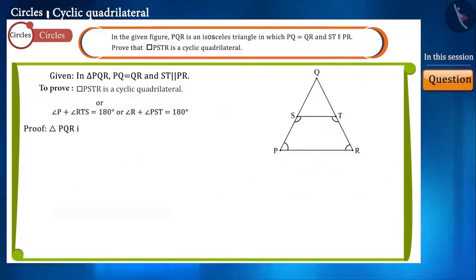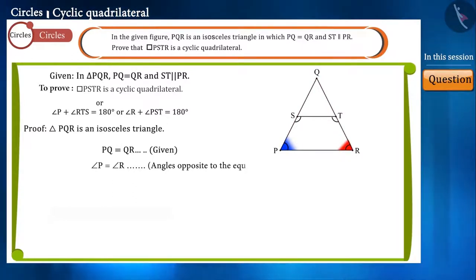Friends, according to the question, triangle PQR is an isosceles triangle in which the sides PQ and QR are equal. So angle P and angle R will be equal because the angles opposite the equal sides of a triangle are equal.